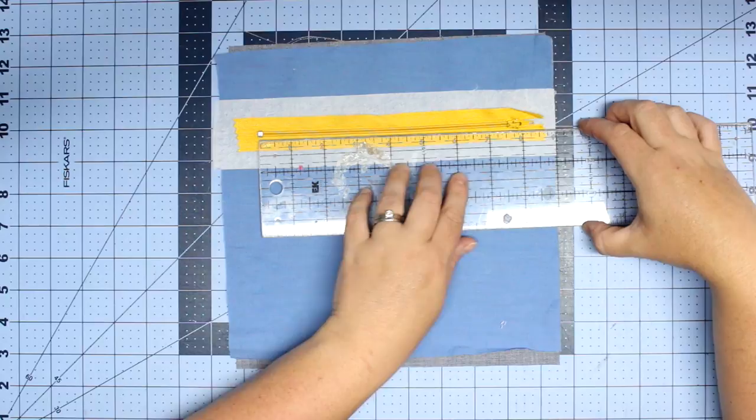But for a regular nylon zipper, this is a perfect measurement. Then we'll draw two little triangles on the sides just like this, and then we will connect the tips of those triangles with one line. The triangle and this line are just guides. You will not sew on those. You will just sew all around the rectangle.